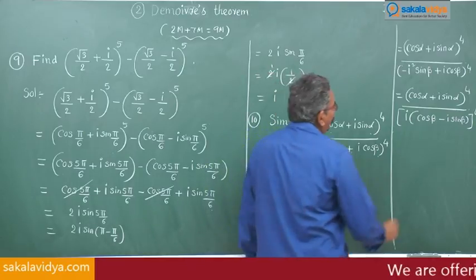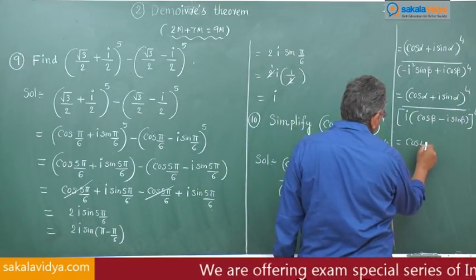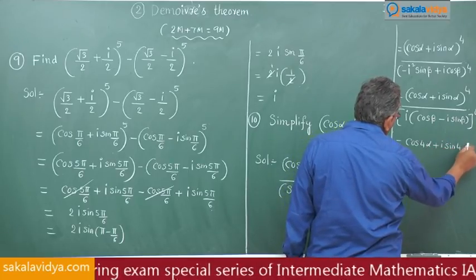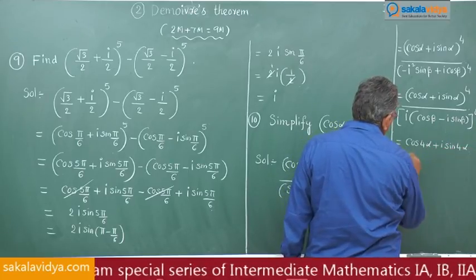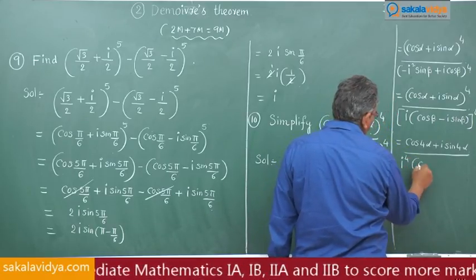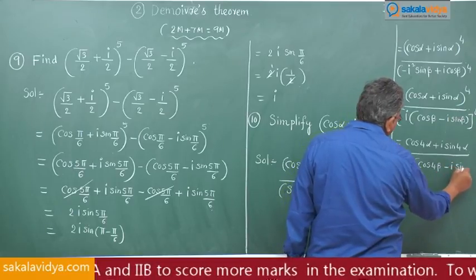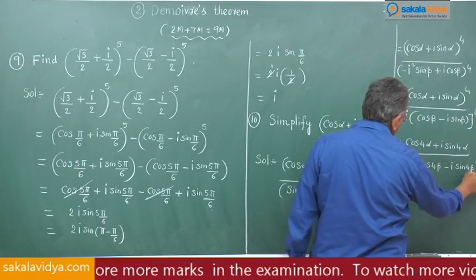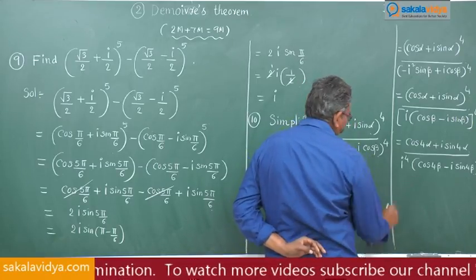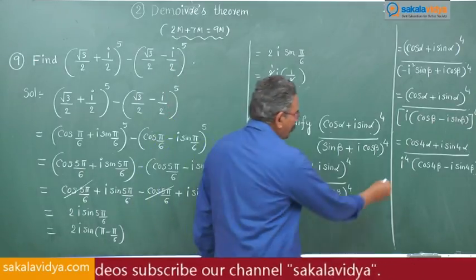Applying De Moivre's theorem: numerator becomes (cos 4α + i sin 4α); denominator becomes i^4 (cos 4β − i sin 4β). Since i^4 = (i²)² = (−1)² = 1, the denominator simplifies to (cos 4β − i sin 4β).